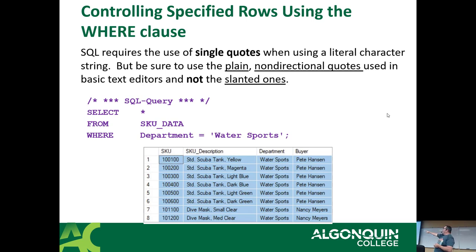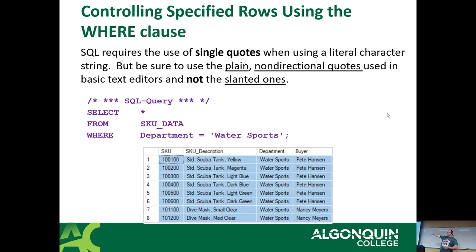Here's an example of our first predicate: SELECT * FROM SKU_data WHERE department = 'Water Sports'. You'll notice this uses an equal sign, not double-equal or triple-equal. Java programmers, C programmers, PHP and JavaScript programmers — pretty much every other language except Python and Pascal — use that single equal sign as an assignment operator. In SQL it's your equality operator, a single equal sign. It's important to remember that, because you'll have frustrations at first when you write SQL like you're writing Java.